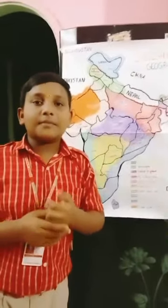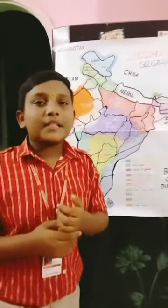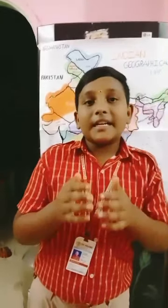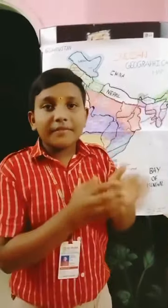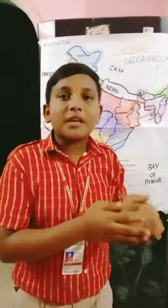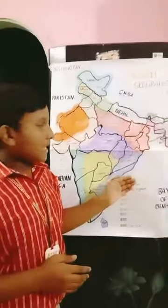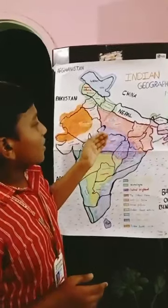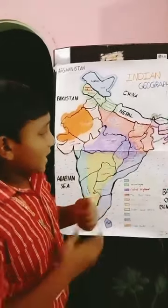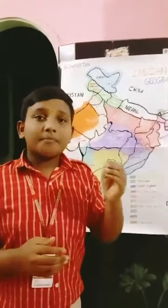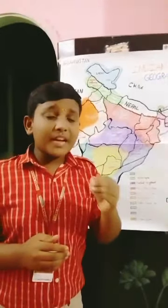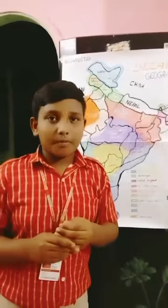Coming to the point of Central Highlands. Central Highlands are regions where we can observe a slope. Here, the rivers flow from the south-east to the north-west, and we can clearly see the slope.